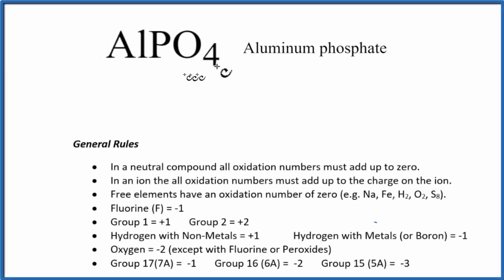In this video, we'll find the oxidation numbers for each element in AlPO4, aluminum phosphate. Overall, this is a neutral compound. There's no plus or minus like you'd see on an ion. In a neutral compound, all the oxidation numbers add up to zero, so that's going to help us.